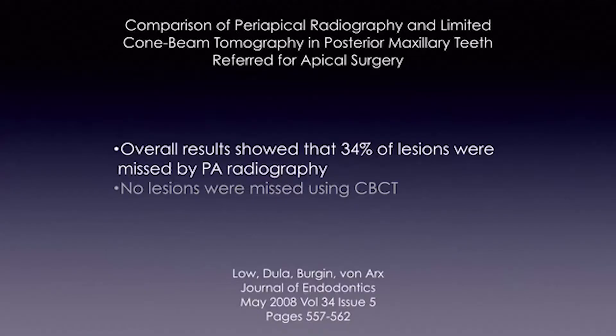Lo, Doula, and Bergen et al. compared periapical radiography and limited cone beam computed tomography in posterior maxillary teeth referred for apical surgery. They found that 34% of the lesions were missed by periapical radiography and virtually no lesions were missed with cone beam computed tomography.